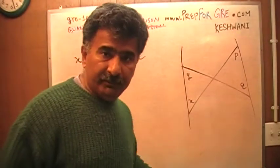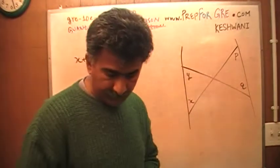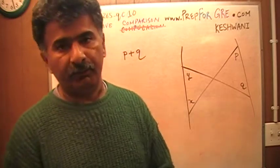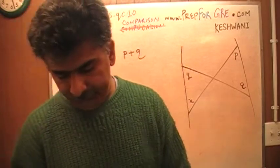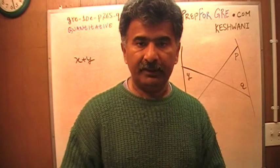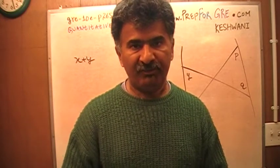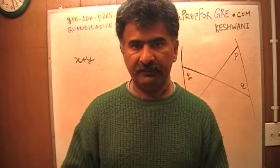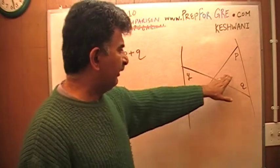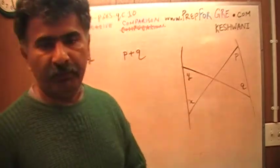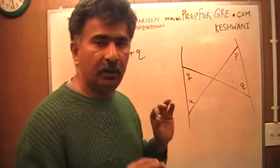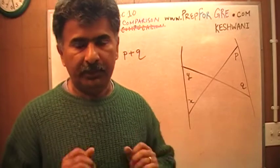Only about half the people who took this exam — 48% of the people — got this question right. The question is, what happened to the other half? My gut feeling is that the people who got it wrong are sitting there asking themselves, 'How the hell am I supposed to figure out these two angles?' And if you ask yourself that question — how do I figure out these two angles — you are missing the bloody point.